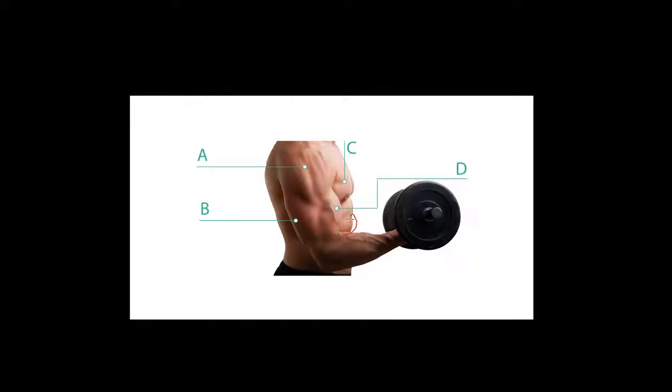Imagine that we are doing a bicep curl in the upward phase. In other words, we are going through elbow flexion in this example. What we would have here, of course, is we would have the bicep, which is the agonist. This is the other way around now from the press-up.